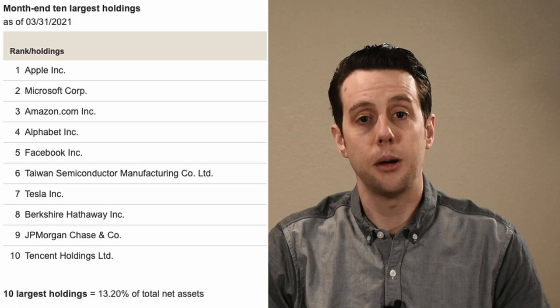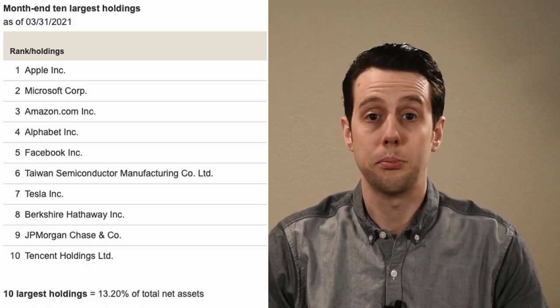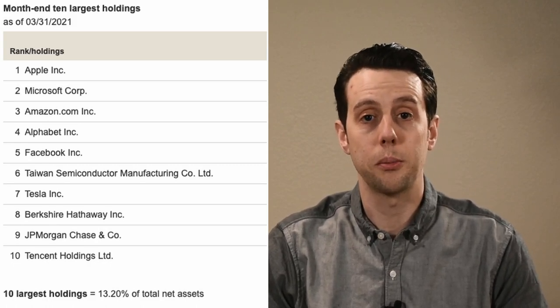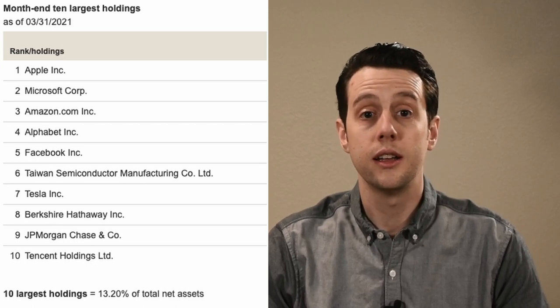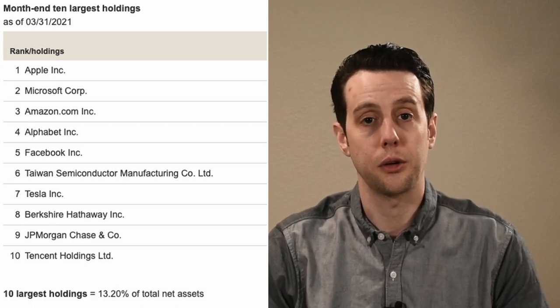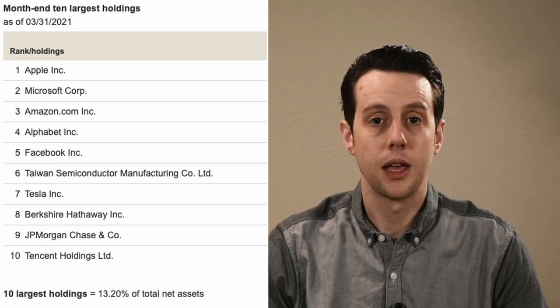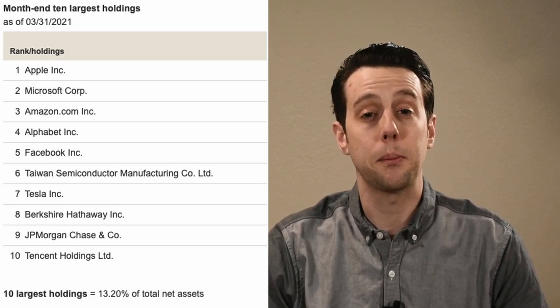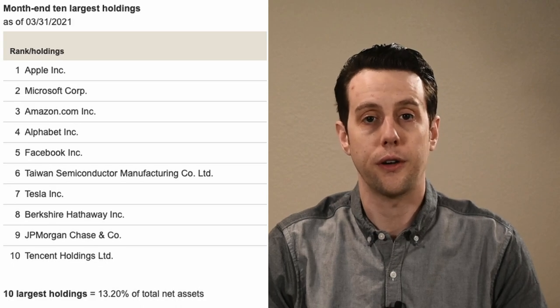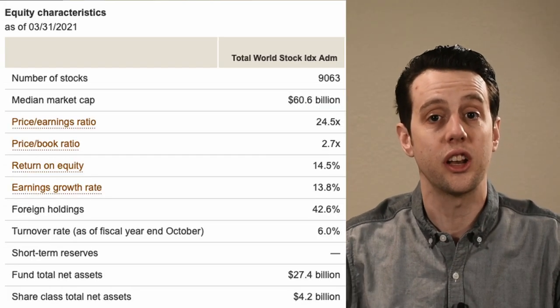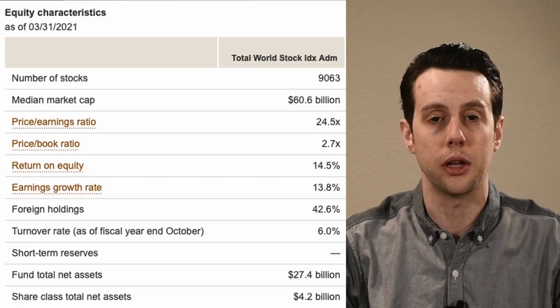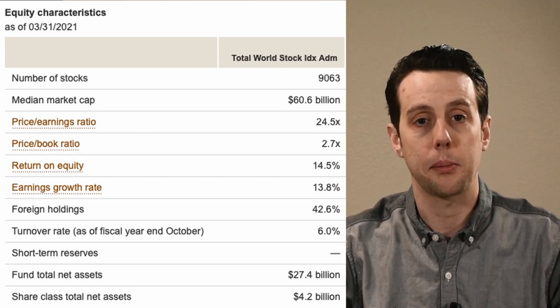The top companies in the index are Apple, Microsoft, Amazon, Alphabet, Facebook, Taiwan Semiconductor, Tesla, Tencent, Berkshire Hathaway, and J.P. Morgan. These reflect 13.2% of the fund. The rest is distributed across more than 9,000 additional companies globally based on their market capitalization.